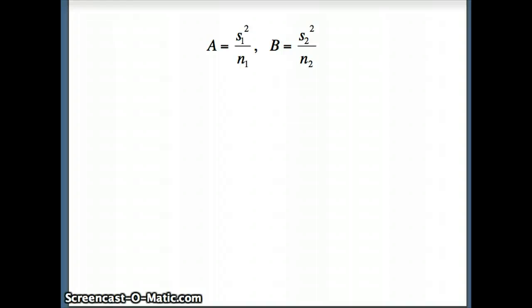So looking at our formula for the degrees of freedom, what do we have? We have (a + b)² all over a² over (n₁ - 1) plus b² over (n₂ - 1). So I'm going to go back to Excel and I'm going to compute a² over (n₁ - 1) and b² over (n₂ - 1).